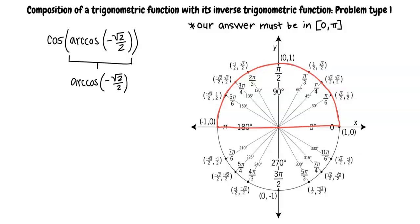What is the angle that makes arc cosine of negative root 2 over 2 true? Since we are restricted to the top half of the unit circle, it would be 3 pi over 4.